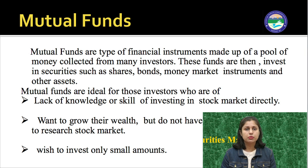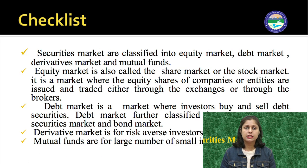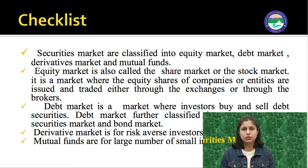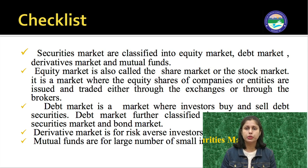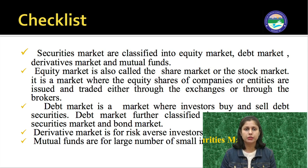This is all about the structure of the securities market. To recap: the securities market is classified into equity market, debt market, derivative market, and mutual funds — four components make up the securities market. The equity market is also called share market or stock market, where companies issue their shares and trading of those shares takes place through stock exchanges like NSE and BSE or through brokers.